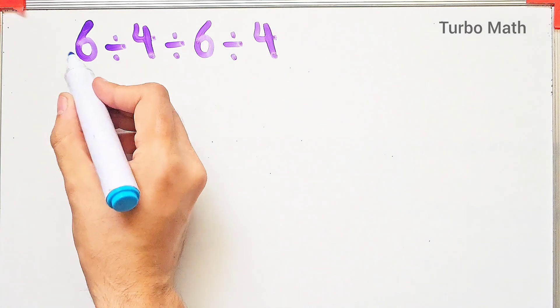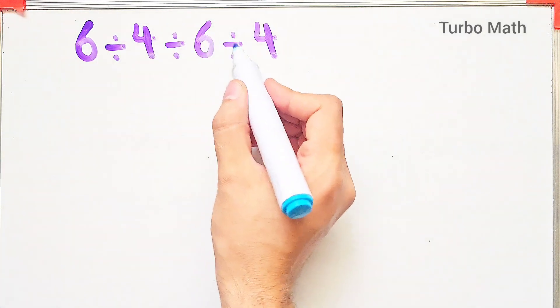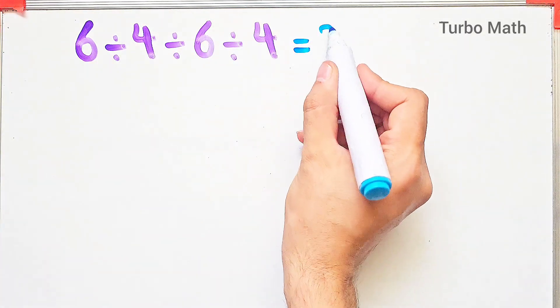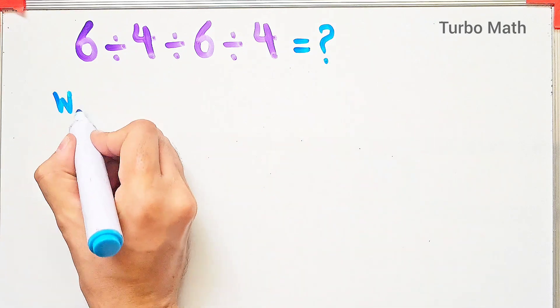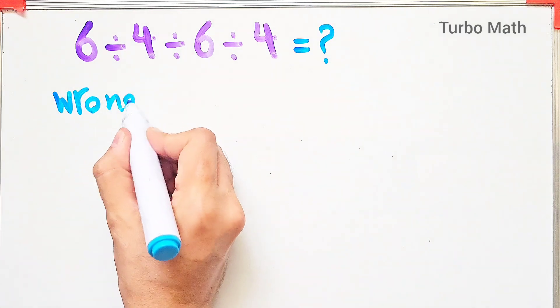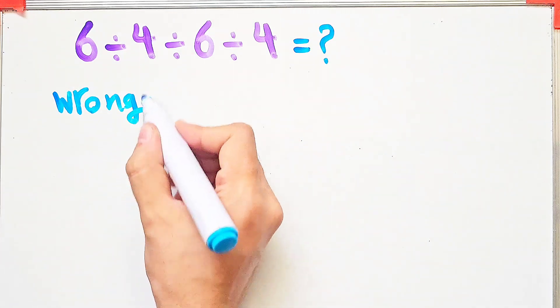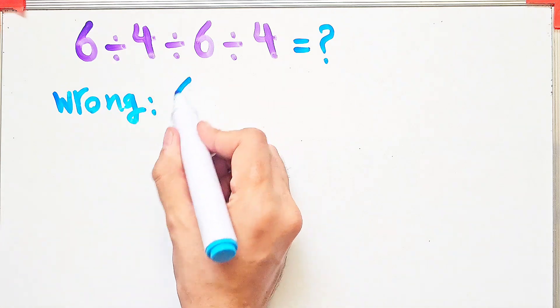Hi friends, welcome to Turbo Mass channel. Six divided by four divided by six divided by four — what is the answer to this question? In the wrong way of solving this question, some people first do this division: six divided